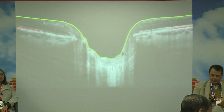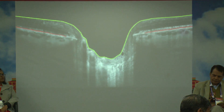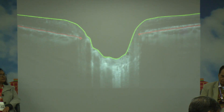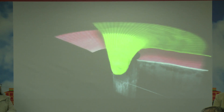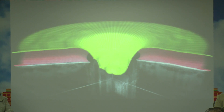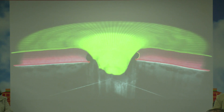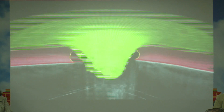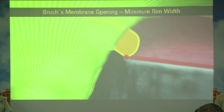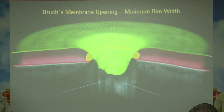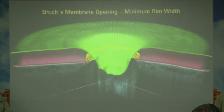Let me start with an animation. The green line is the internal limiting membrane and the red line is the Bruch's membrane. The red dot is the Bruch's membrane opening. Once the segmentation of the internal limiting membrane and the Bruch's membrane is done and the red dot — the Bruch's membrane opening — is marked, we can see a yellow line going through, which is the Bruch's membrane opening minimum rim width: the smallest distance between the internal limiting membrane and the Bruch's membrane opening.